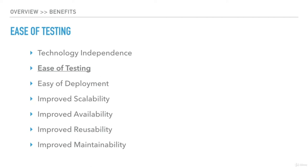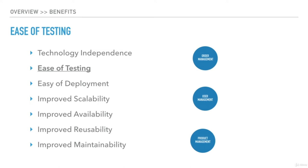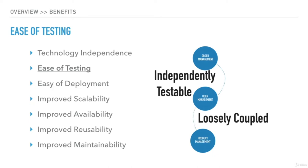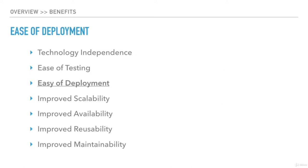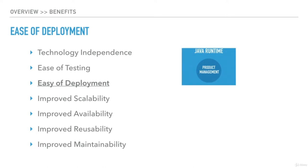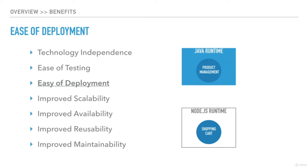Ease of testing is another benefit. As each microservice is developed separately, they are independently testable. Even though services communicate with each other, they are only loosely coupled. If services are updated with new features, they can be validated without worrying about other microservices. Ease of deployment is one of the key advantages — with microservices architecture, each service can have a different runtime environment. The product management service could be based on Java runtime, whereas the shopping cart could be based on Node.js runtime. The architecture provides flexibility for each microservice to be deployed or updated in its own environment with its own timelines. Even the complexity of deployment reduces significantly, as the size of each service is much smaller than the monolith.